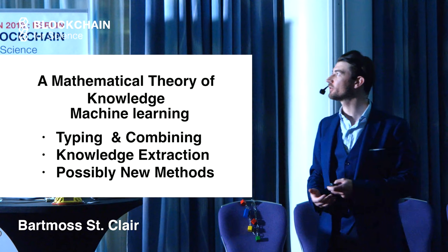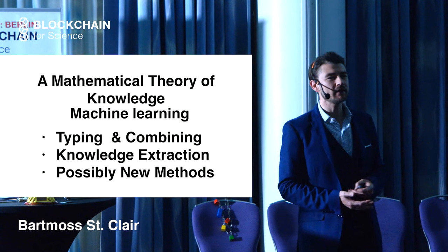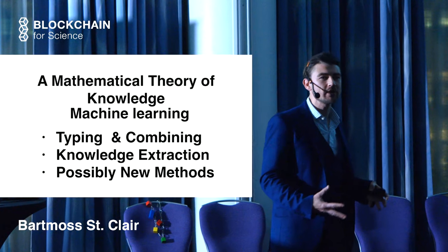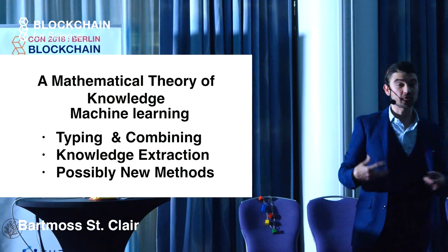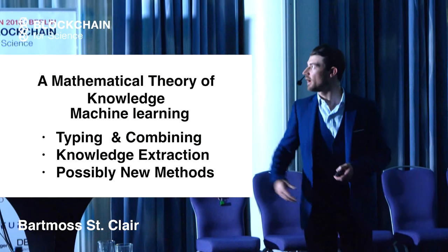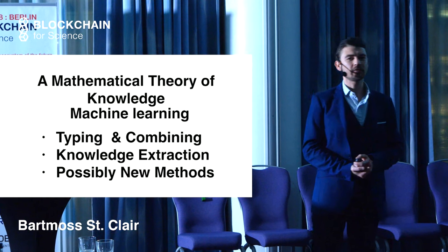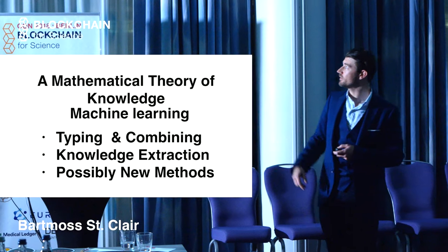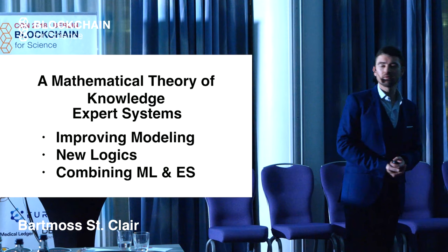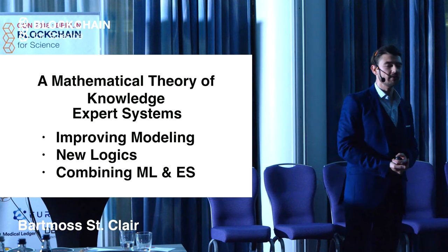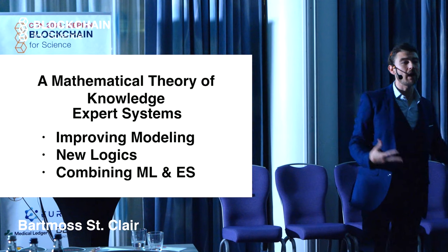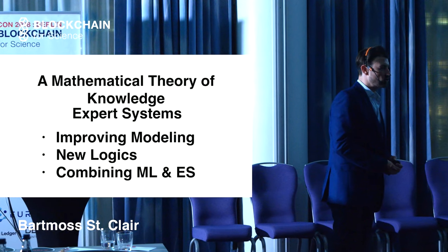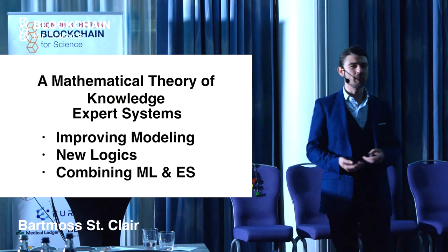In machine learning, you can do typing machine learning algorithms and combining them. If you have a mathematical theory of knowledge, it's very helpful for that. Knowledge extraction, obviously. And even possibly new methods. That's what I'm really excited about and that's why I do this really abstract mathematics. In expert systems, you can improve the modeling of expert systems. You can create new logics and you can even combine different types of machine learning and expert systems to build hybrid systems that are much better.